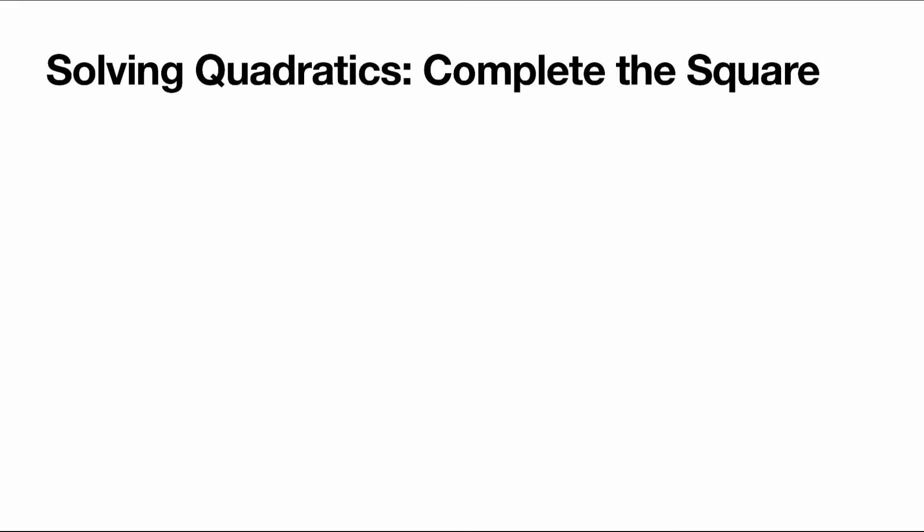In this video we will be talking about the second method to solve quadratics, which is completing the square. This method involves writing the quadratic expression in the completed square form. As a quick recap, completing a square is writing a quadratic expression in the form of (x + u)² + v, where u and v are some numbers.